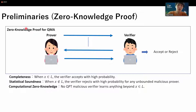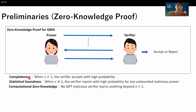In this talk I'll consider zero-knowledge proof for QMA. In zero-knowledge proof for QMA, a prover can convince a verifier that the instance X is a YES instance without revealing any information beyond that fact. More formally, the following three properties hold. The first property is completeness: when the instance X is a YES instance and the protocol is executed honestly, the prover accepts with high probability.